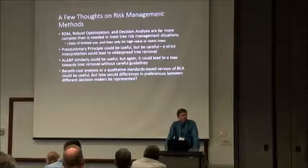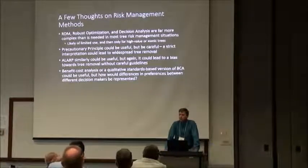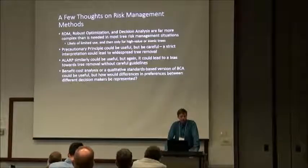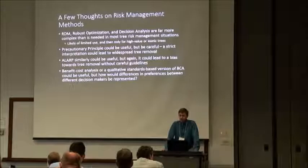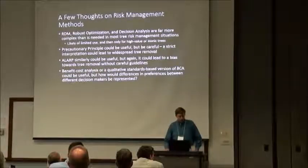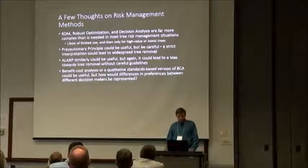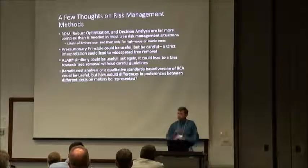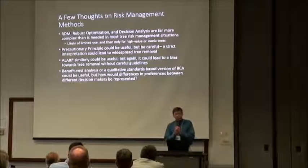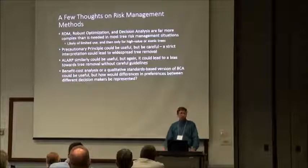A few thoughts on these different risk management methods: I'm a professor, and I'm supposed to say the most computationally complex methods are the best — but they're not for what we're trying to do here. Robust optimization, decision analysis are far more complex than needed for most risk management situations. Maybe for a particularly high-value iconic tree you'd want decision analysis. The precautionary principle could be useful, but a strict interpretation would bias you toward tree removal. ALARP could be useful because it has a reasonableness test, but you must carefully define 'reasonable cost' and avoid bias toward removal.